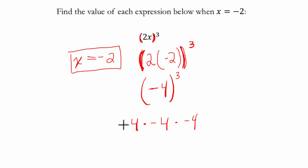Well negative 4 times a negative 4 is a positive 16. Then we need to multiply by another negative 4. Well positive 16 times negative 4 is a negative 64.